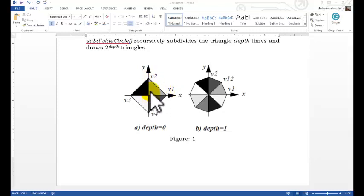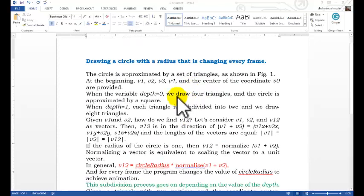Zero v1 v2, this one zero v2 v3, zero v3 v4, zero v4 v1. So this is the above triangle. When that variable depth equal to zero, we draw four triangles and the circle is approximated by a square.